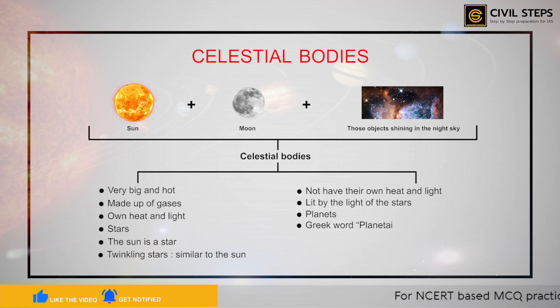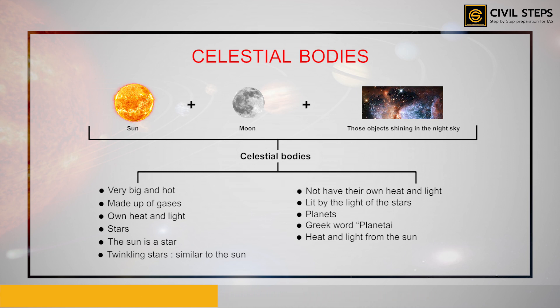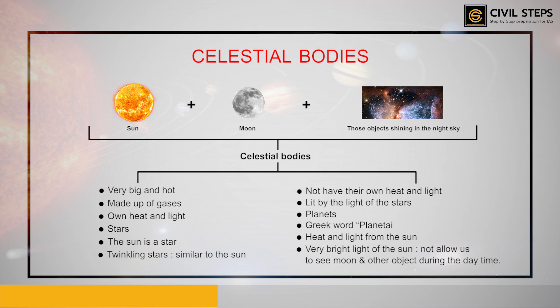Such celestial bodies are called planets. The word 'planet' comes from the Greek word 'planetes,' which means wanderers. The Earth on which we live is also a planet — it gets all its heat and light from the Sun, which is the nearest star. The very bright light from the Sun does not allow us to see all the bright objects of the night sky during the daytime.